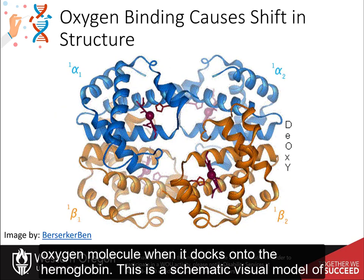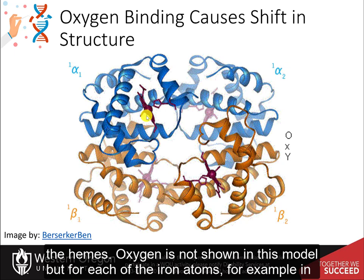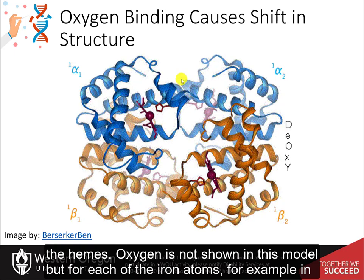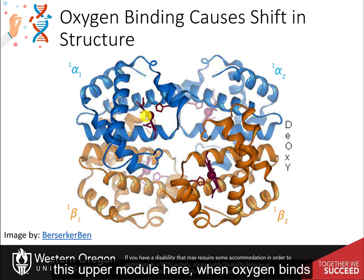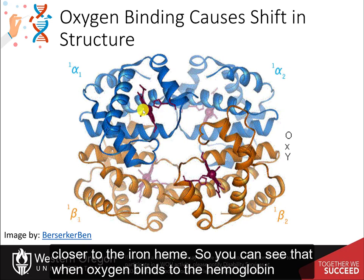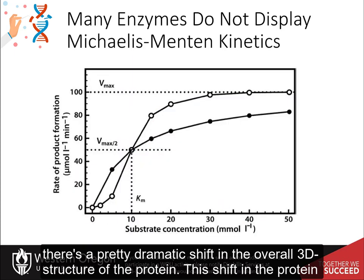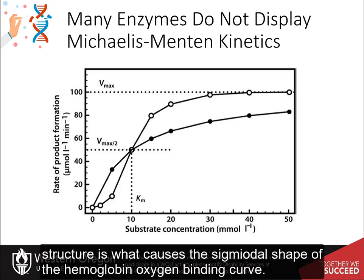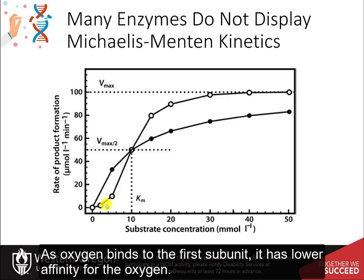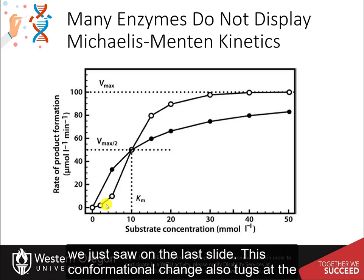This is a schematic visual model of the oxygen binding process in hemoglobin. It shows all four monomers of hemoglobin and the hemes. For each iron atom — for example, in the upper module — when oxygen binds, the molecule flexes in this direction and tugs the histidine residue closer to the iron heme.